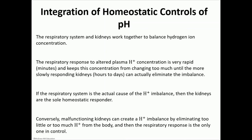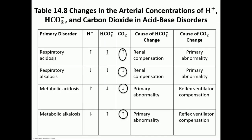The homeostatic control of pH is a shared function between the renal and respiratory systems. The respiratory system responds much faster — within minutes — by adjusting breathing rate (hyperventilating or slowing down). The renal response is much slower, taking hours to days. If the initial cause of acid-base imbalance is respiratory, the kidneys must compensate; if the cause is non-respiratory, the respiratory system compensates.